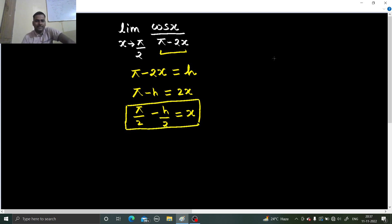Now, another thing as x tending to pi by 2, when x tending to pi by 2, put pi by 2 in this. So pi minus 2 times pi by 2 which is pi minus pi equals 0. So in that case h will tend to 0.